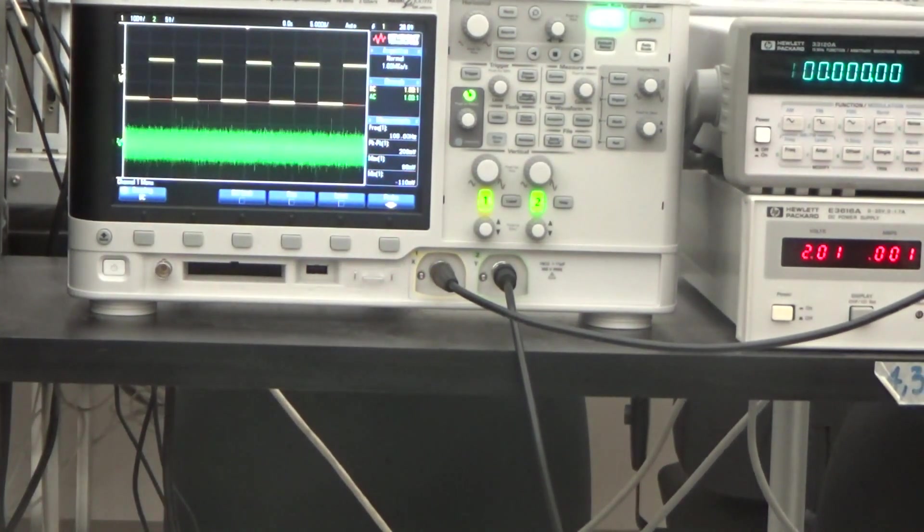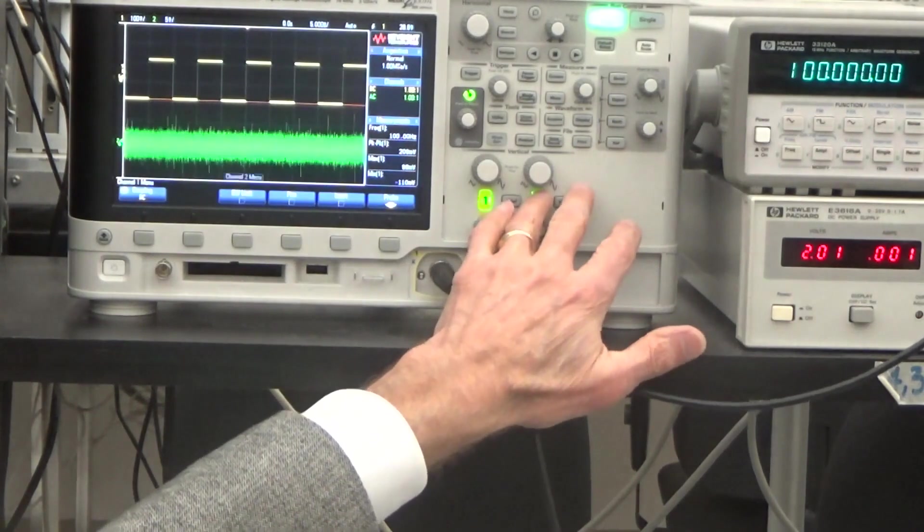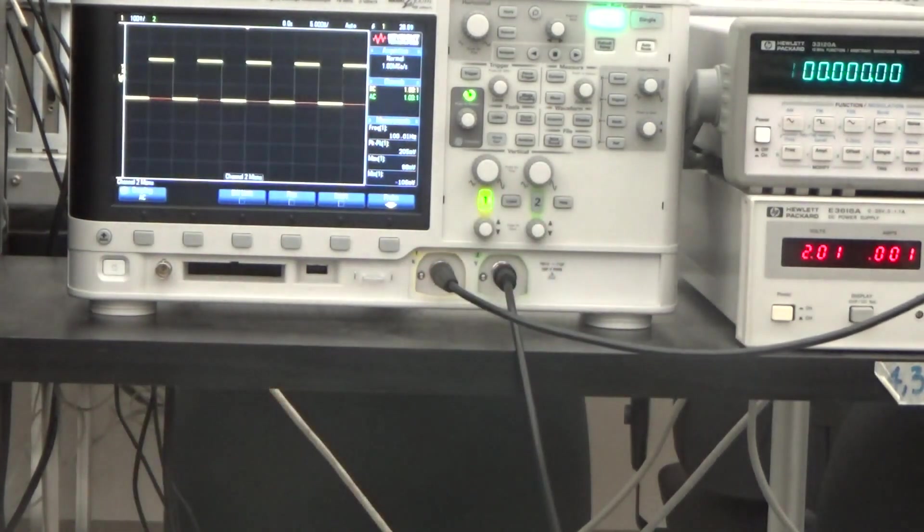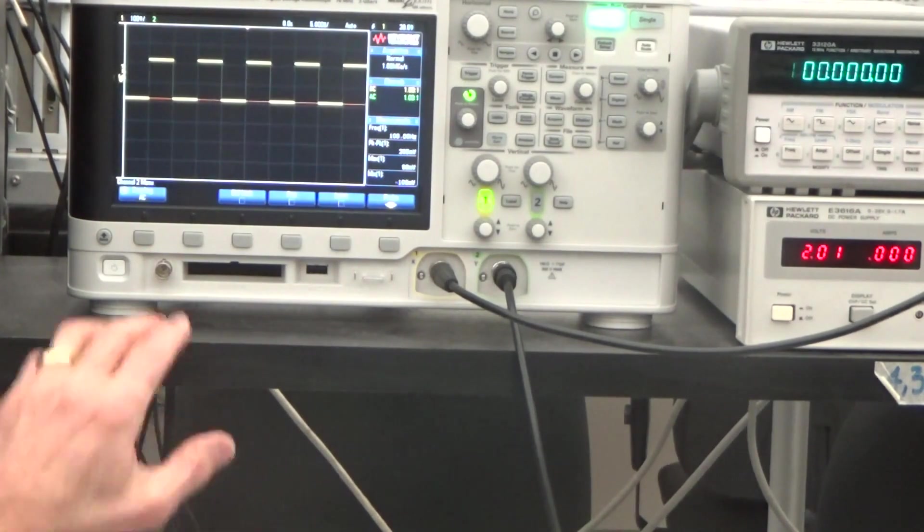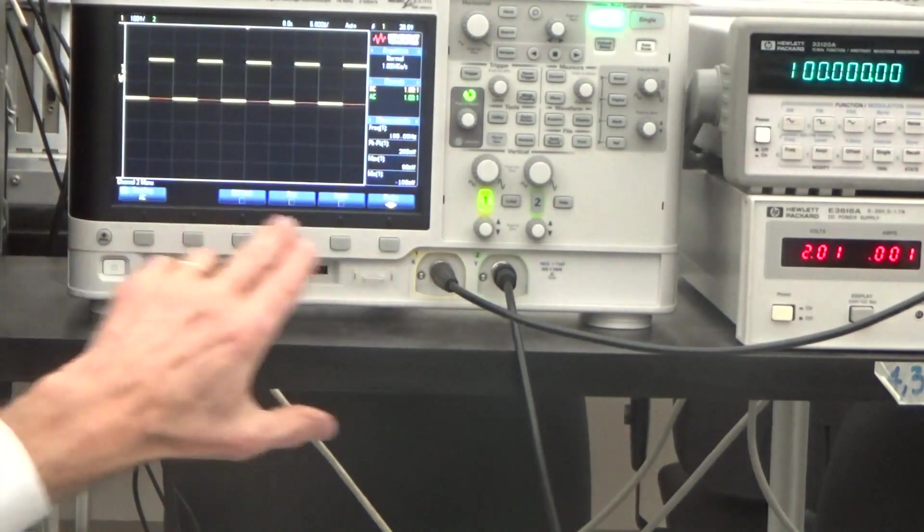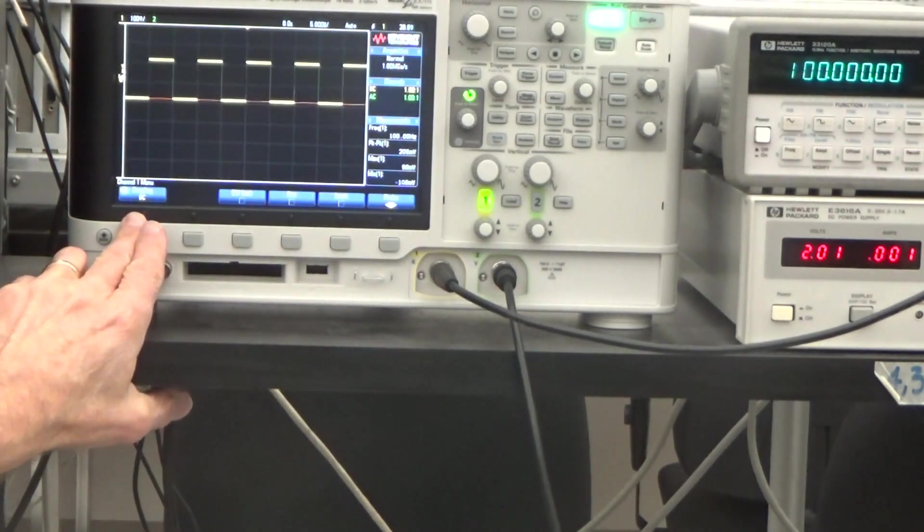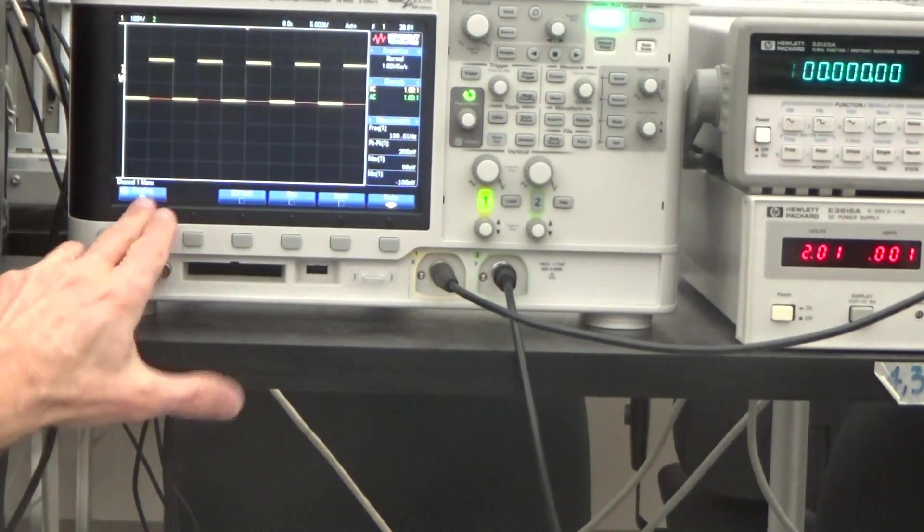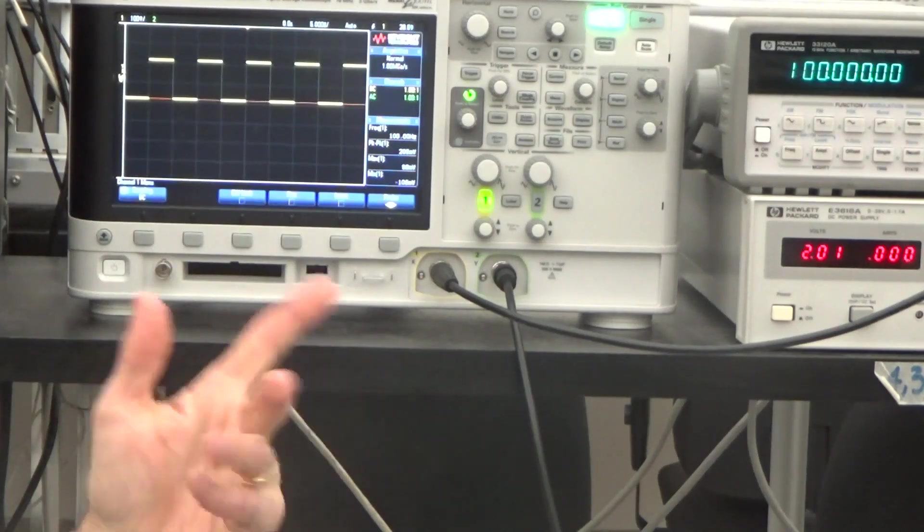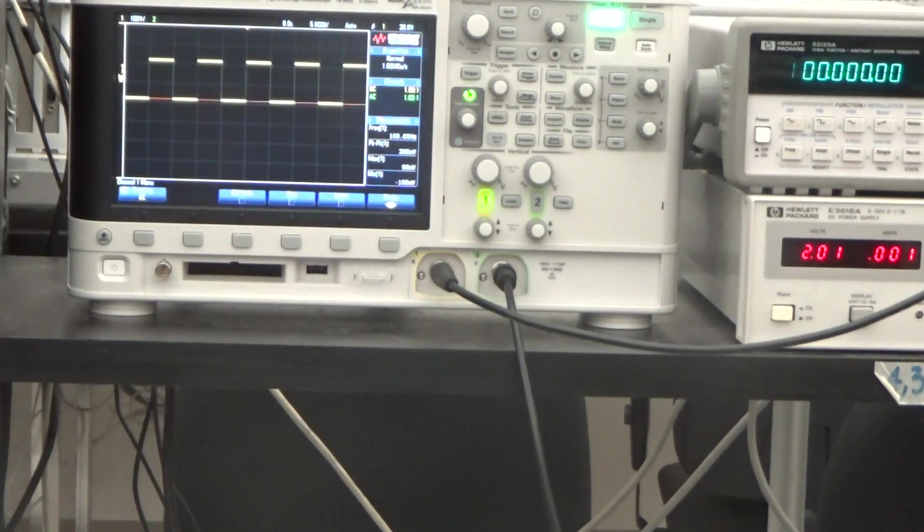Okay, now so I want to talk about the function generator output. So I'm going to turn off the channel 2 signal. And we can just look at this square wave. Now if I go to the channel 1 menu here, we can see that we are DC coupled here. And we get the nice 100 hertz square wave.